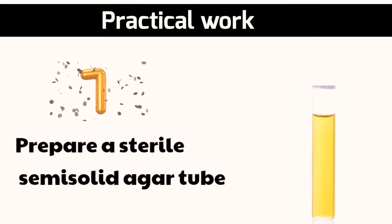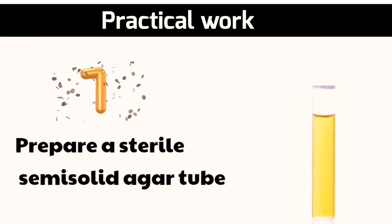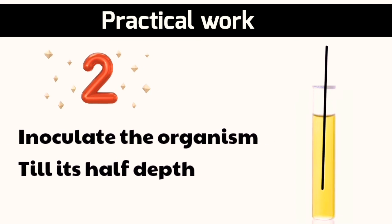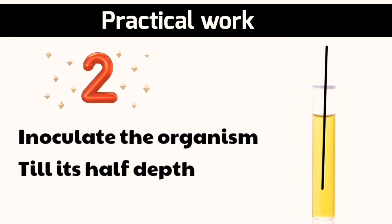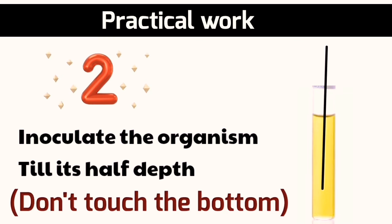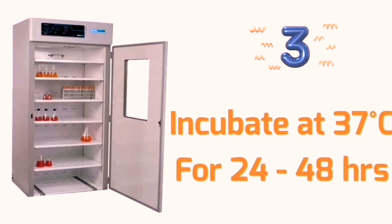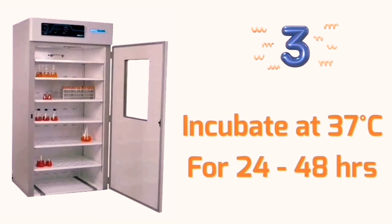Prepare a sterile semi-solid agar tube. Inoculate the organism with a straight wire, making a single stab down the center of the tube to half its depth. Incubate the tubes at 37 degrees Celsius.